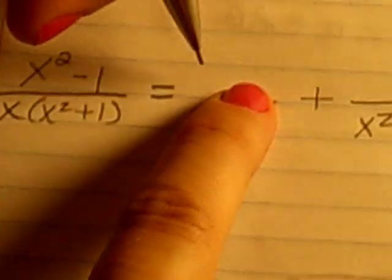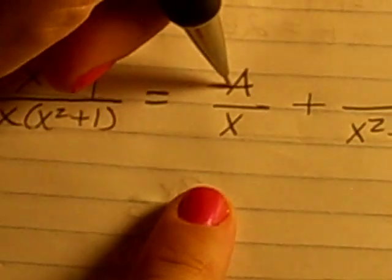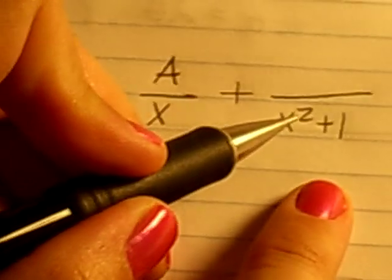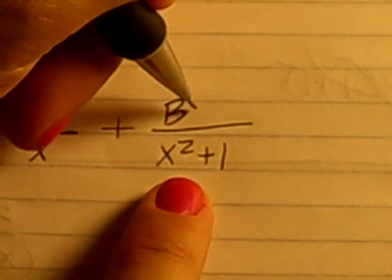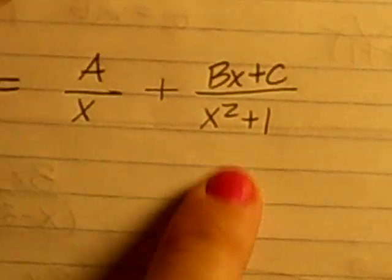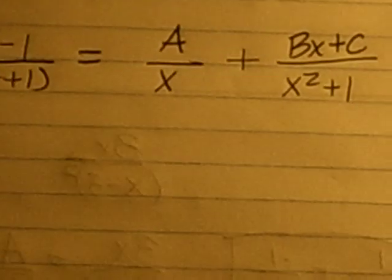Now in the numerator for the linear, we just use a constant, so I'll just use the letter A. However, for a quadratic denominator, we need to have a linear term. So remember, a linear term looks something like this. So we'll have that one for the denominator, for the numerator.